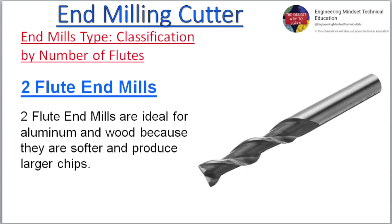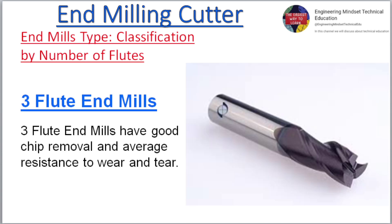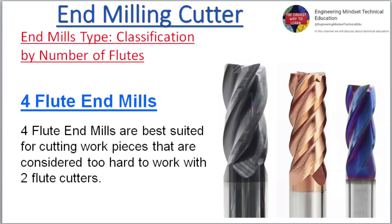End mill type classification by number of flutes: 2-flute end mills are ideal for aluminium and wood because they are softer and produce larger chips. 3-flute end mills have good chip removal and average resistance to wear and tear. 4-flute end mills are best suited for cutting workpieces that are considered too hard to work with 2-flute cutters.